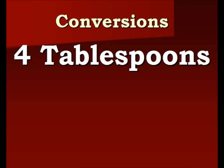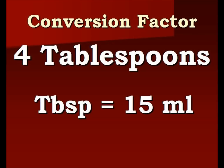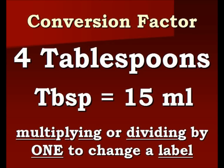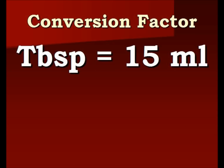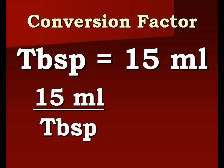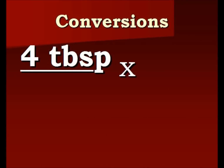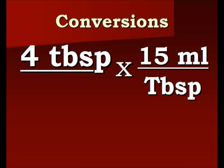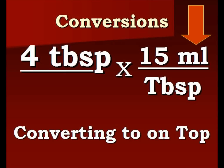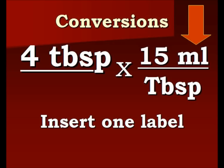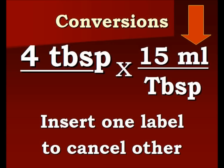We begin with our example of four tablespoons. We're going to insert our conversion factor — remember we're going to multiply or divide by the number one just to change a label. We have our conversion factor and we're going to turn that into a ratio: 15 milliliters over tablespoons. This equals one. We're going to move to our chart and multiply that conversion factor into our four tablespoons. Notice what we're converting to is on top — the milliliters. We're inserting one label in an effort to cancel out another label; we're trying to cancel out the tablespoons, so those cancel out.